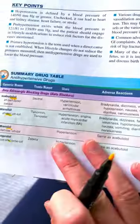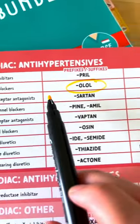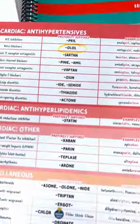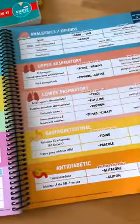So you don't have to remember every single medication in your textbook — just remember the suffix. You can find the most common antidotes and prefixes in the complete nursing school bundle.